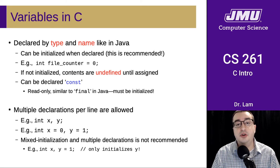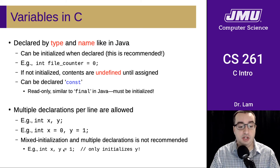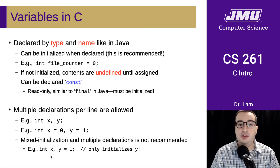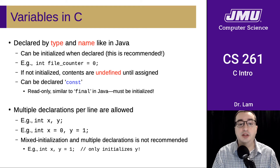Multiple declarations per line are allowed, although I don't recommend this because it can lead to some misleading syntax. For example, in this declaration here, it appears as though we're declaring two variables, X and Y, that are both equal to one — but that's not actually what's going on. What's happening is that X is being declared uninitialized, and Y is going to be set to an initial value of one. So I recommend that you only declare one variable per line.